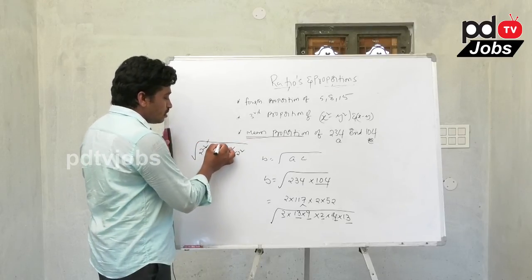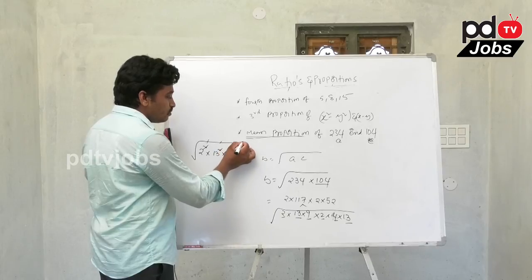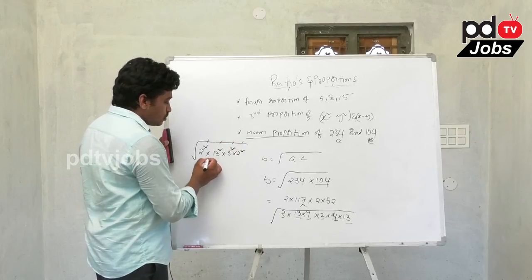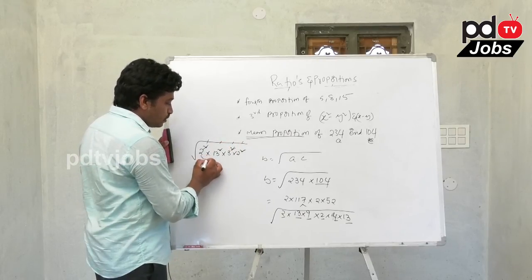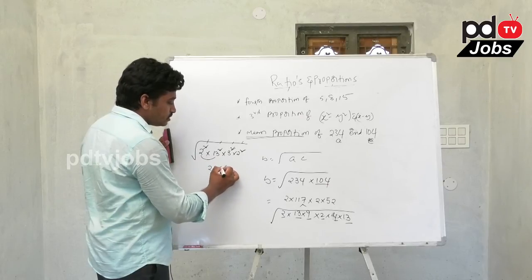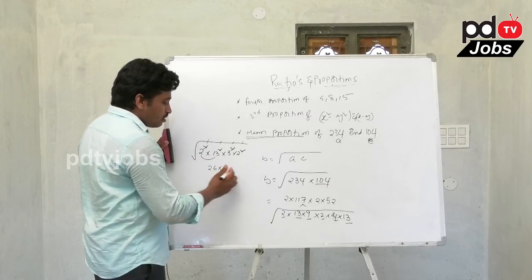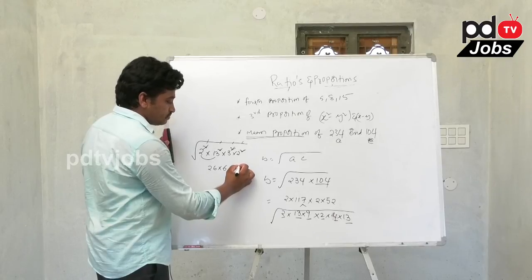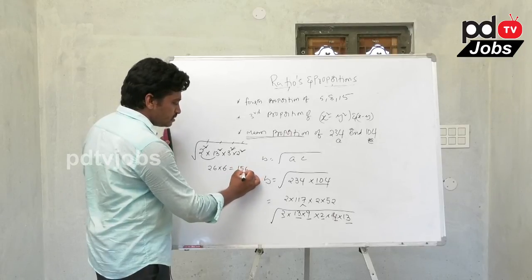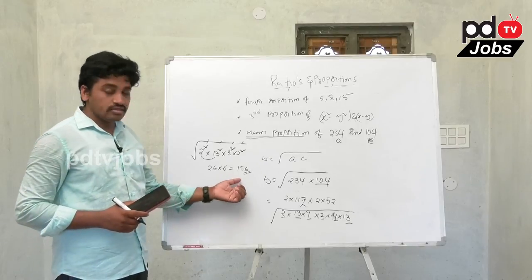The square root and square cancel for each pair. This gives 2 × 13 × 3 × 2 = 26 × 6 = 156. So 156 is the answer for the mean proportion.